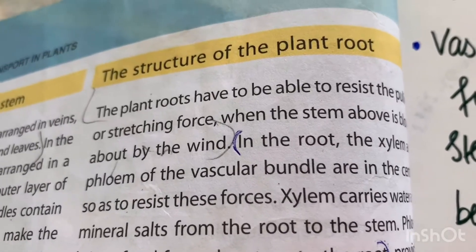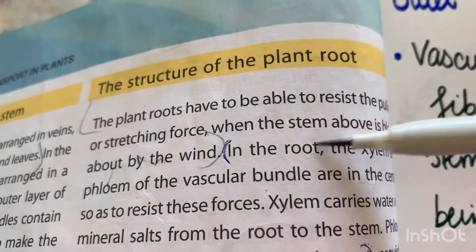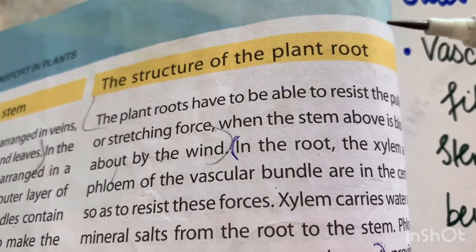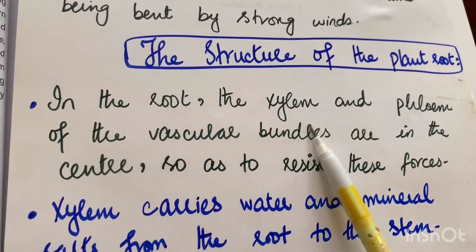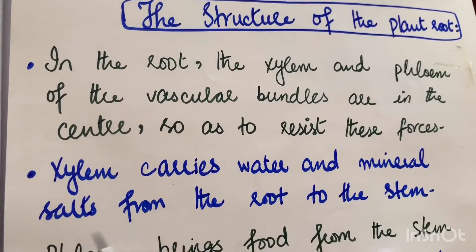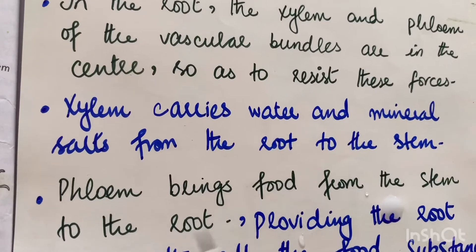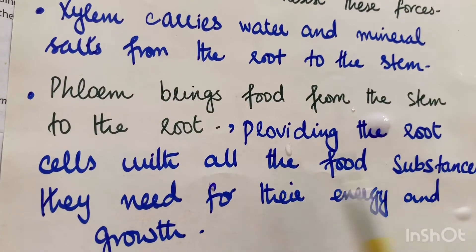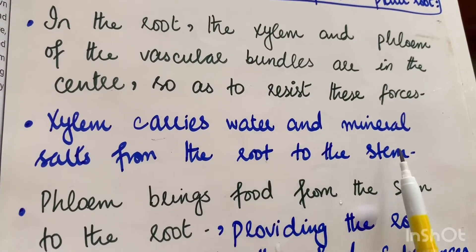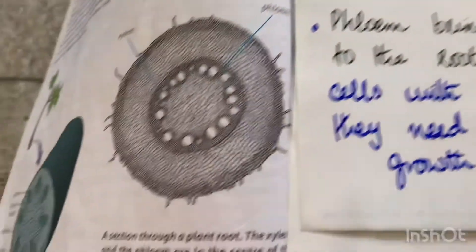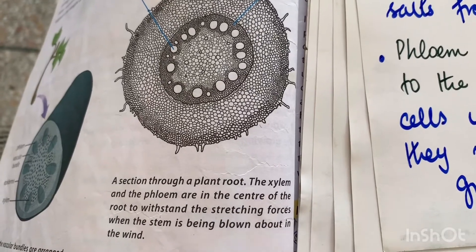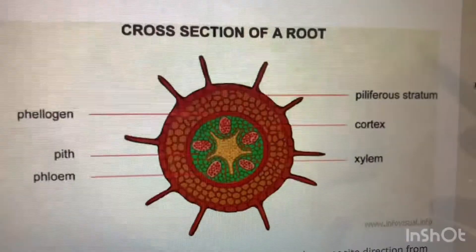Now looking at the structure of a plant root: in vascular plants, roots are the organs that typically lie below the surface of the soil, though roots can also be aerial — growing above the ground or above water. In the root, the xylem and phloem of the vascular bundles are located in the center, so as to resist pulling or stretching forces. Xylem carries water and mineral salts from the roots to the stem; phloem brings food from the stem to the root, providing root cells with the substances they need for energy and growth.